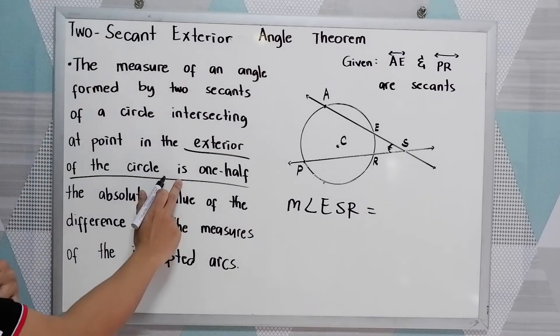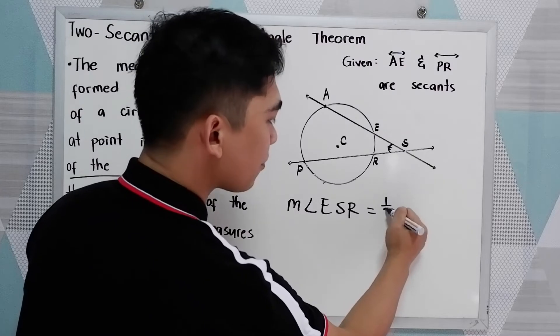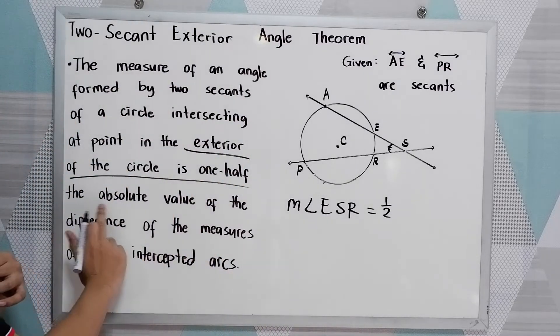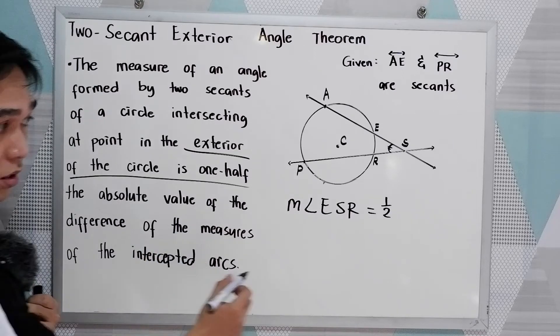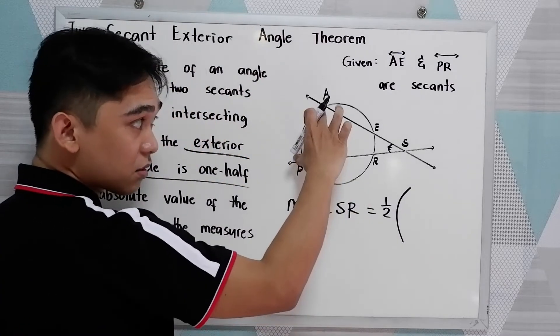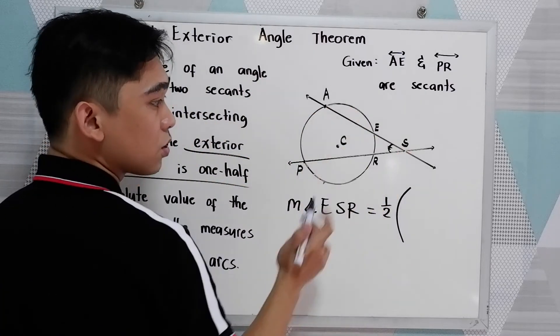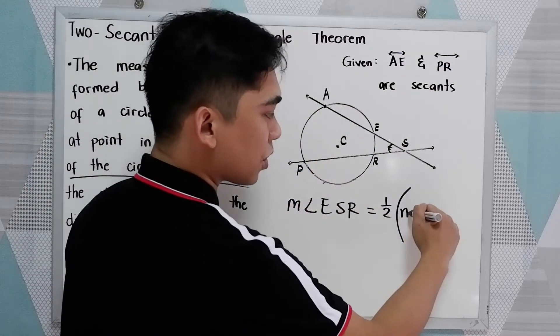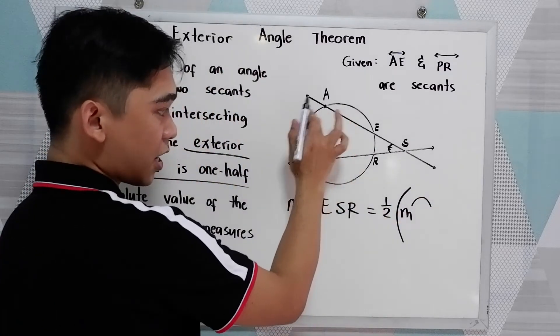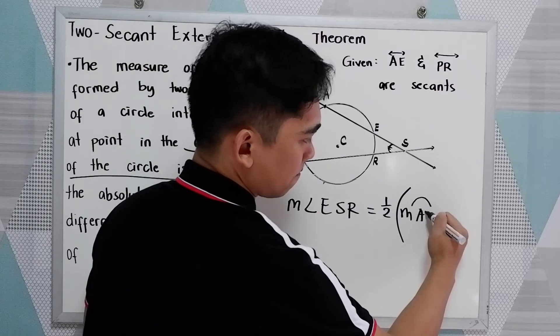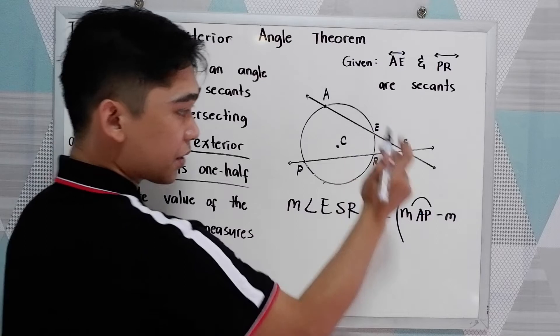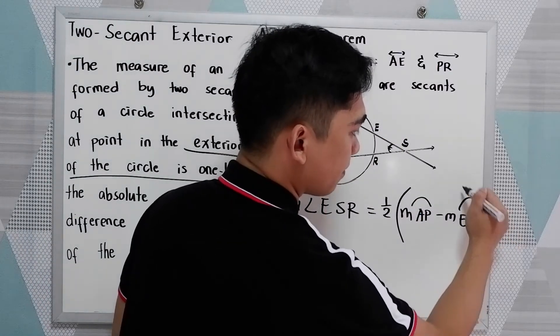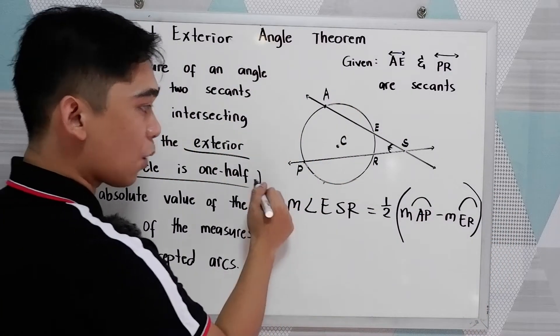is one half the absolute value of the difference of the measure of the intercepted arcs. So we have the intercepted arcs. We need to get the difference. We have the measure of arc AP minus the measure of the second arc ER. That would be our conclusion.